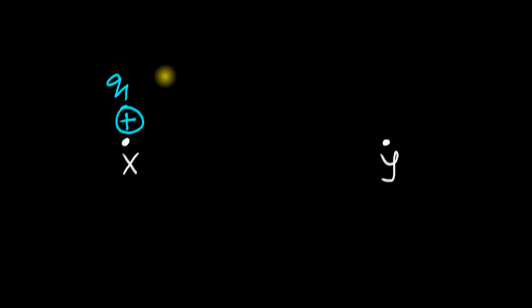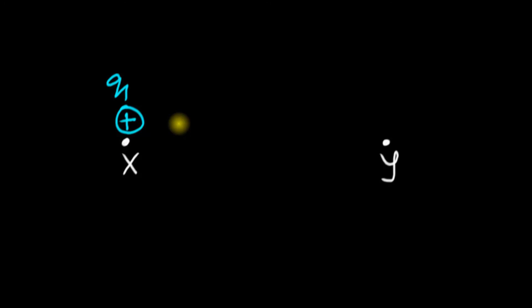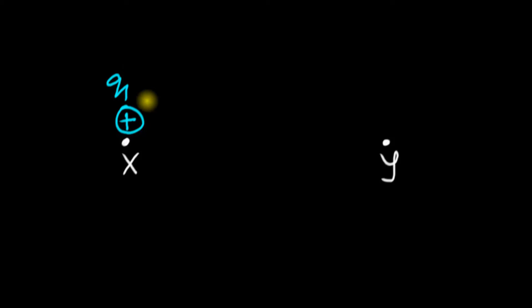When we do this, we tend to think nothing else happens in space — I just keep charge Q1 over there, like keeping a ball on a table. But in reality, this charge actually interacts with space. This charge is going to talk to space and tell it: if any other positive charge comes in your vicinity, you're supposed to push it away from me. That's what it tells space.